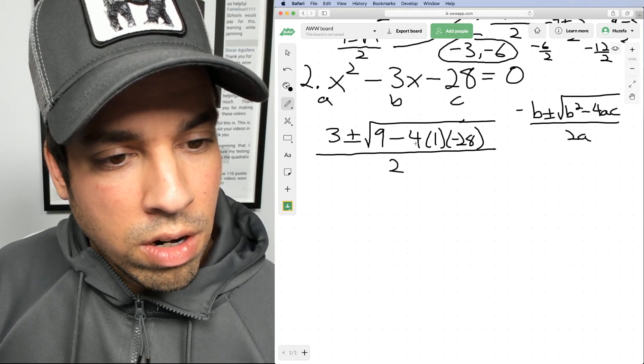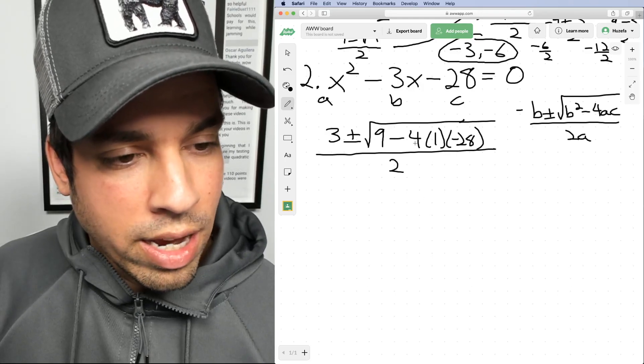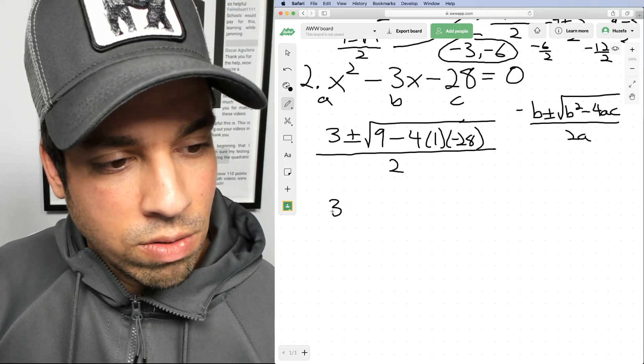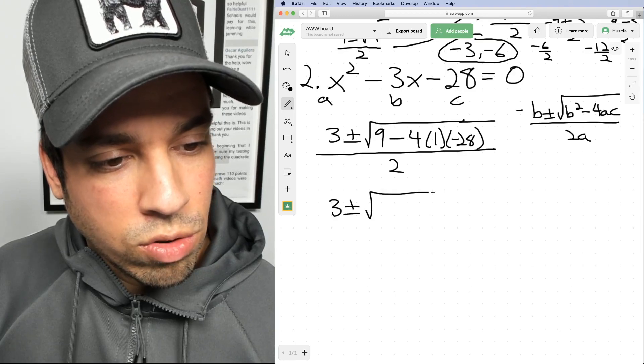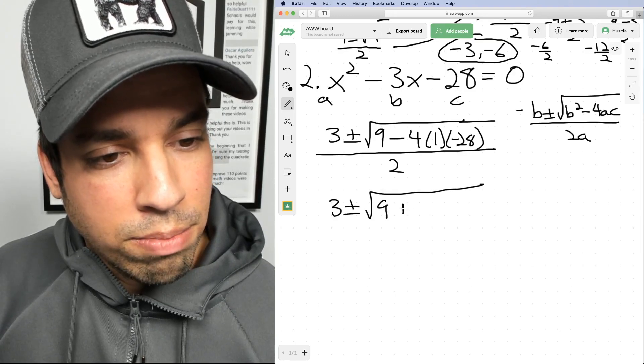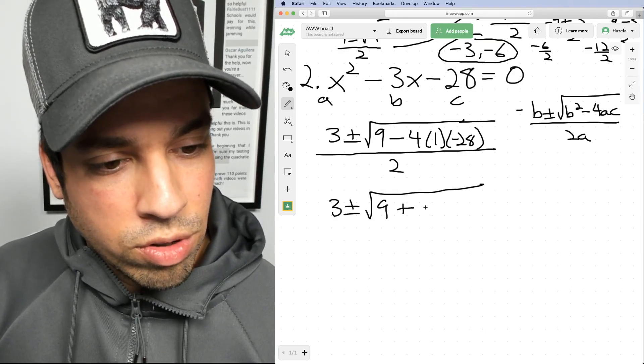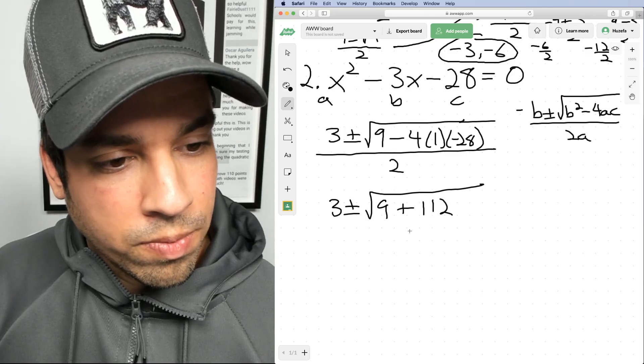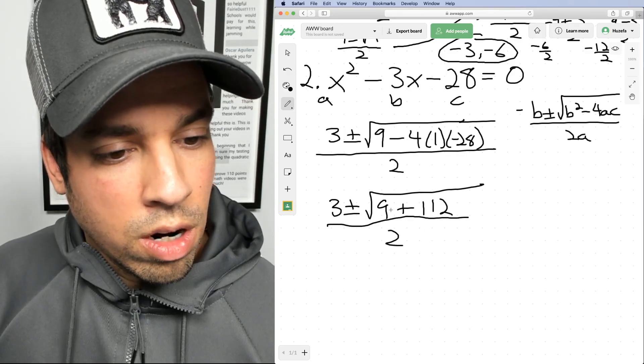First, let's handle what's going on in here. Four times one times 28. The negatives are gonna cancel out. So we have three plus or minus square root of nine, plus 80 plus 32 is 112 over two.